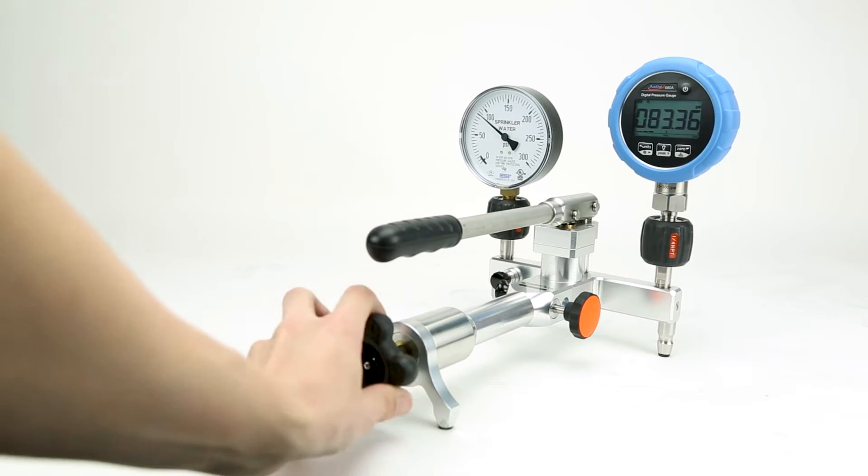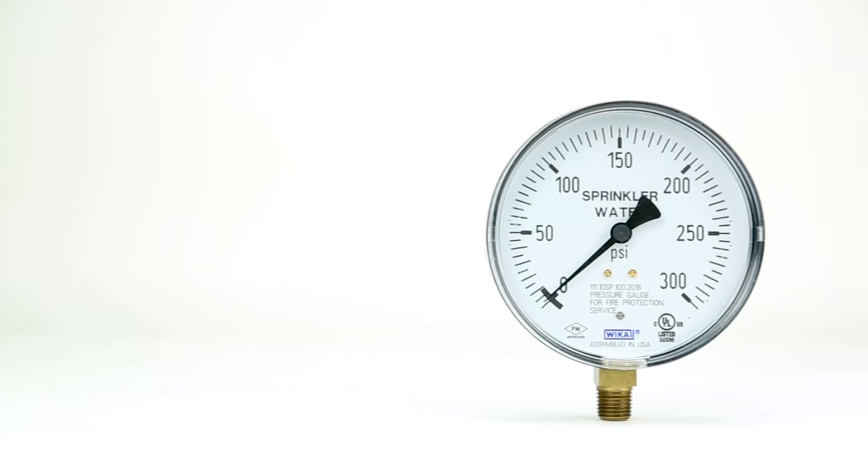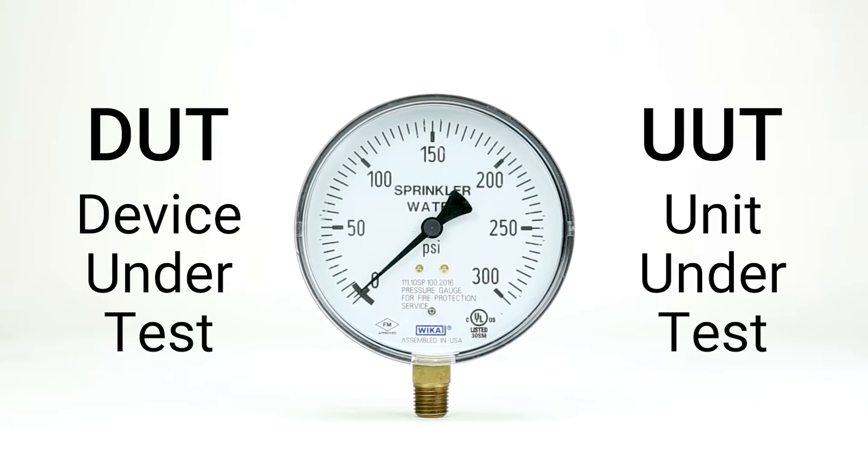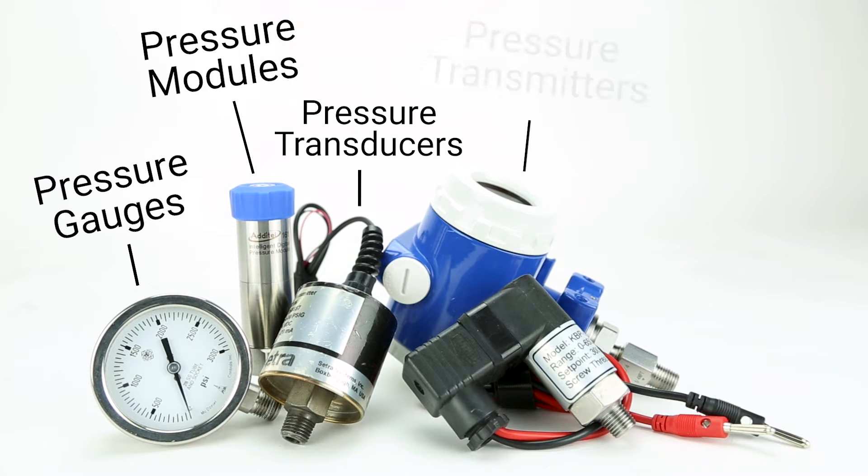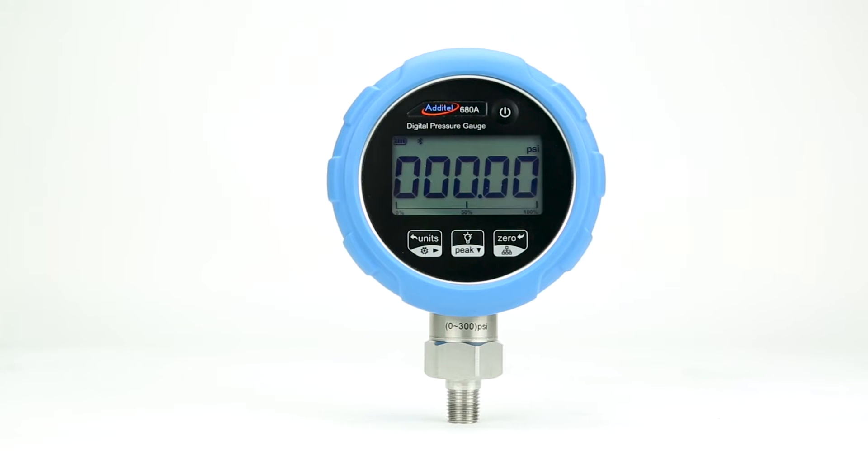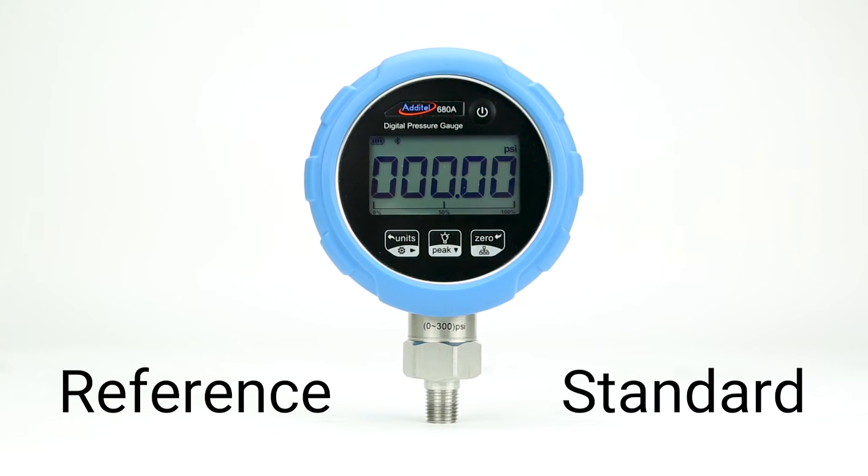The pressure device being tested is often called the device under test or unit under test, and can be any of the devices shown in part three of this video series. In order to calibrate the DUT, a reference or standard is needed to compare to the DUT reading.